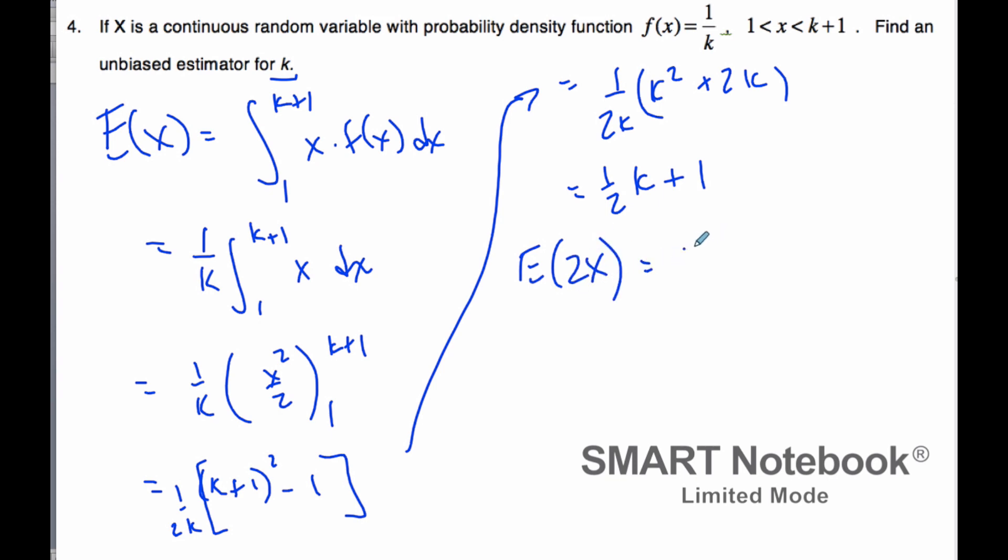If I do the expected value of 2X as my statistic, that's 2 times the expected value of X, which is 2 times ((1/2)k plus 1), which equals k plus 2. I'm off by 2.